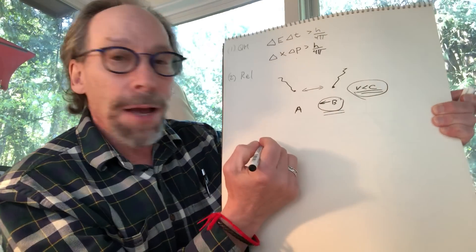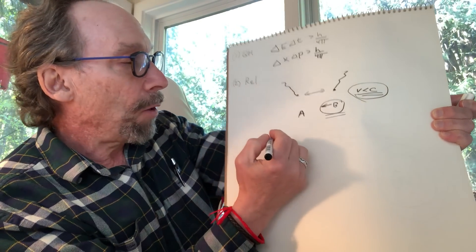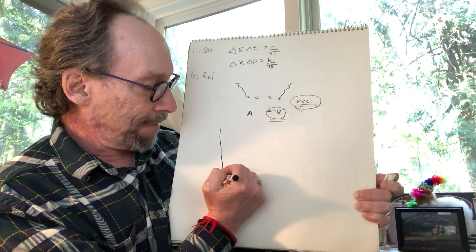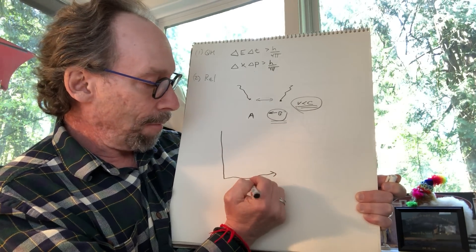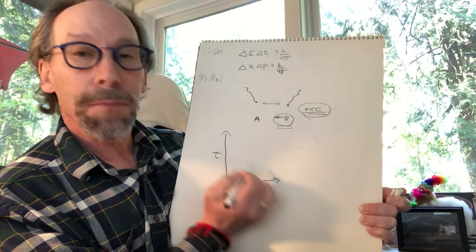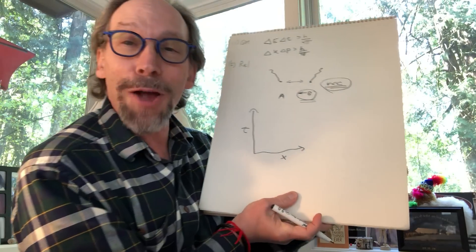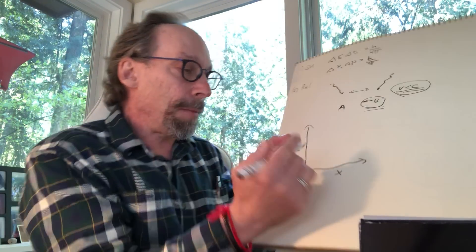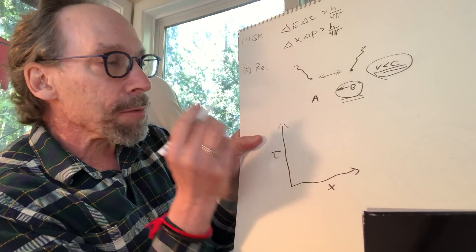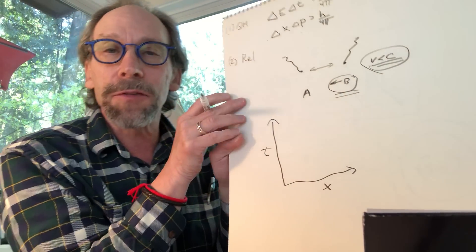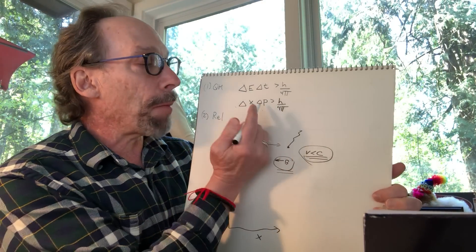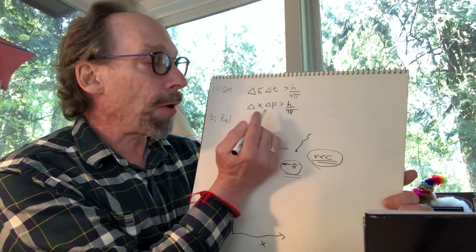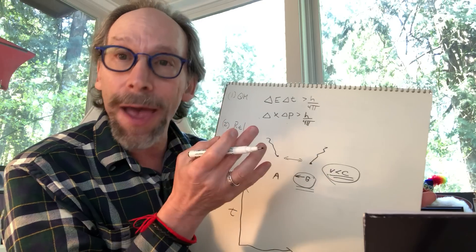Let me draw a diagram. I consider a particle moving in space and time — this is space, and this is time — it's called a space-time diagram, the kind of thing Feynman used to use. What the Heisenberg uncertainty principle tells us is that there are uncertainties in the momentum of a particle if it's over very short distances. Particles can be traveling with various momenta.